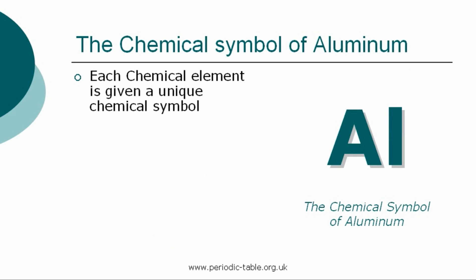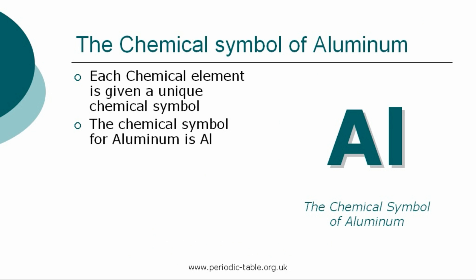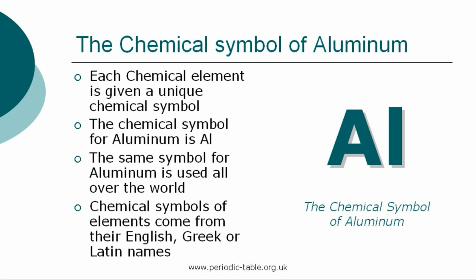Each chemical element is given a unique chemical symbol, which is used all over the world. The chemical symbol for aluminum is AL. The chemical symbols of elements come from their English, Greek, or Latin names. The first letter of a symbol is always a capital letter, and if there are any subsequent letters they are expressed in lower case.